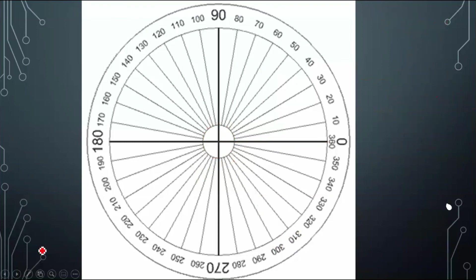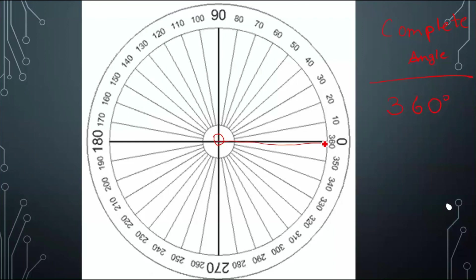Now the last angle should be a complete angle. A complete angle has to be exactly 360 degrees. So let's mark out our vertex and place our first ray at zero. Just so you know that there are two rays, I'm going to mark an arrow and put another one over here. So now you know that it is a full 360 degree angle — not a zero angle.